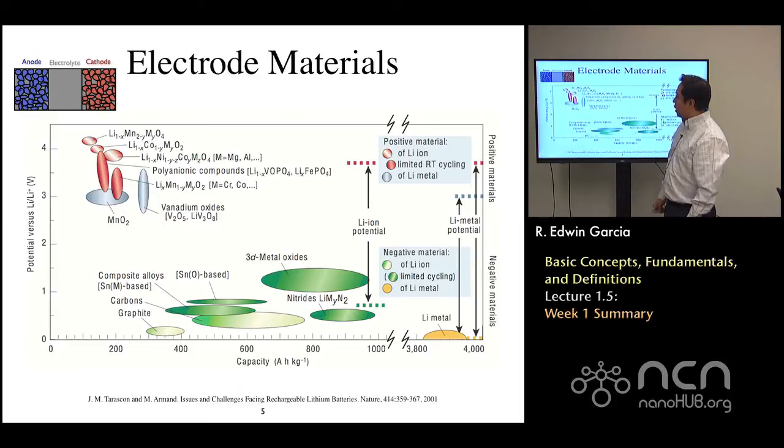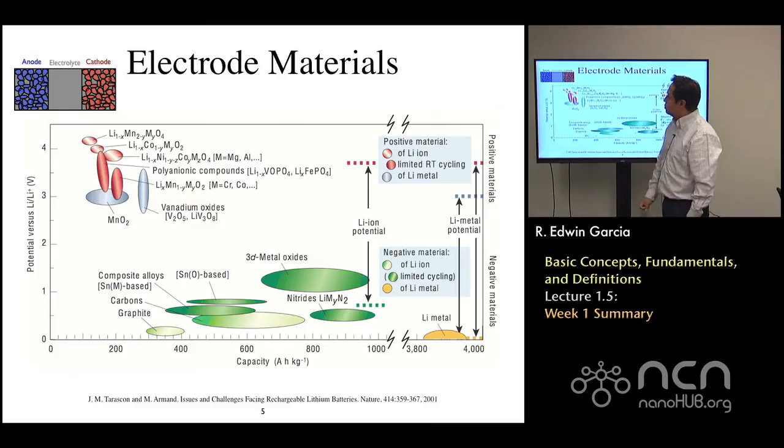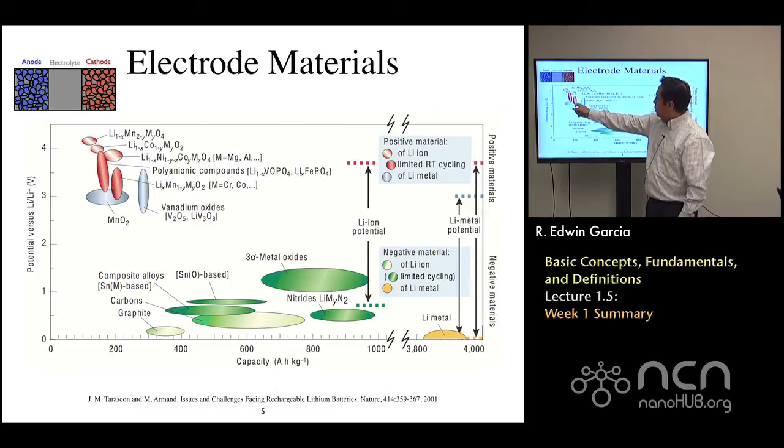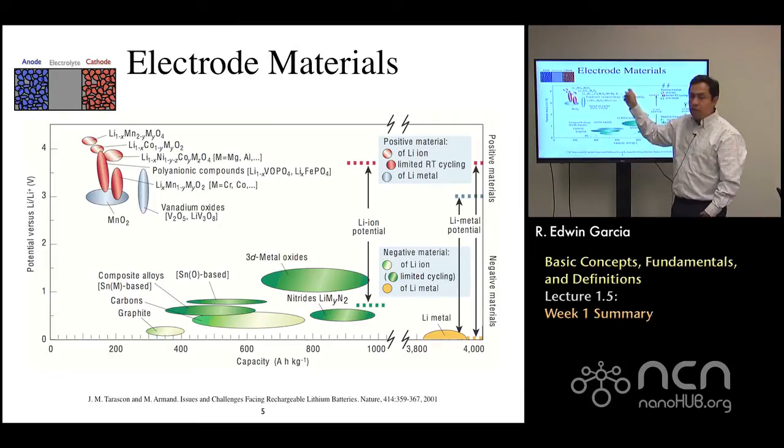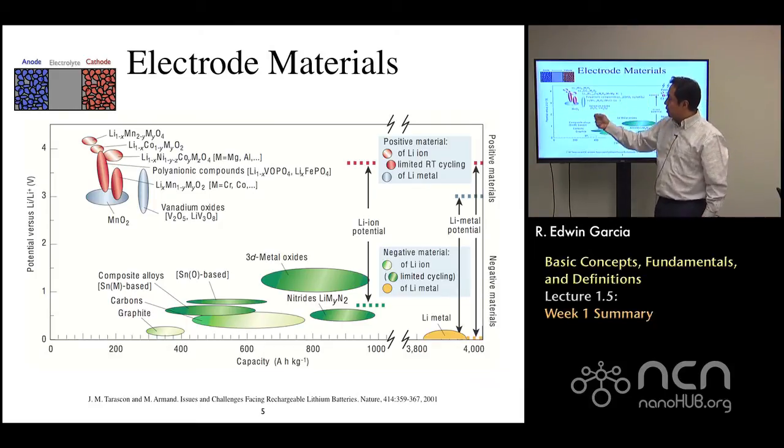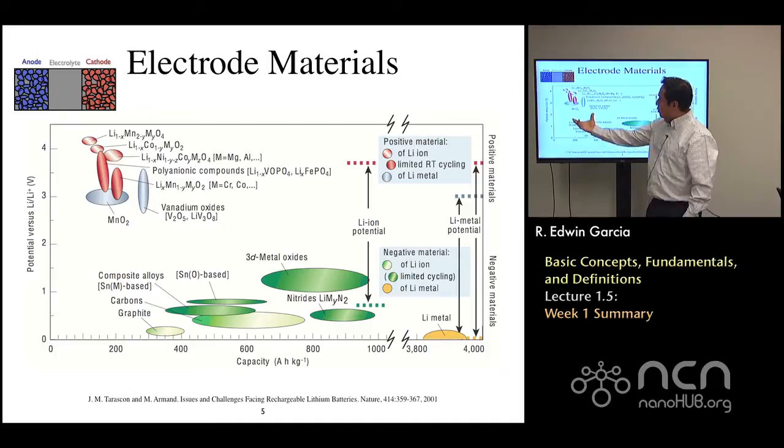The chemistries that are being used for high energy density applications correspond to the lithium cobalt metal oxide systems. For high power density applications, people are using the manganese oxide, and these days they alloy them with, for example, the lithium nickel cobalt metal oxide where the metal could be magnesium or aluminum just to give it a little bit of higher conductivity. That's for the cathode side.